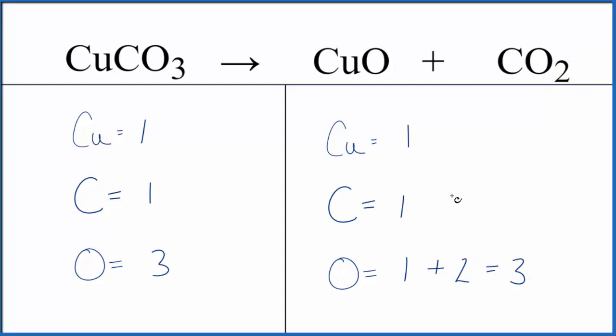If we look at the equation, it's already balanced. We have one copper on each side, one carbon on each side, and three oxygens. People usually have problems because they forget to count this one or these two oxygens, and then it gets difficult to balance.